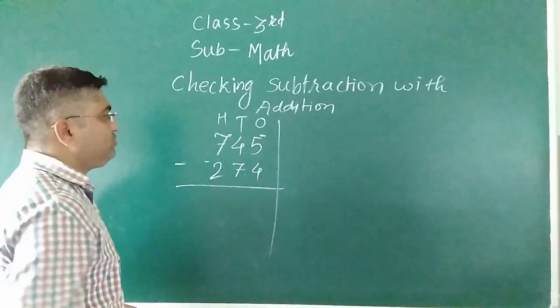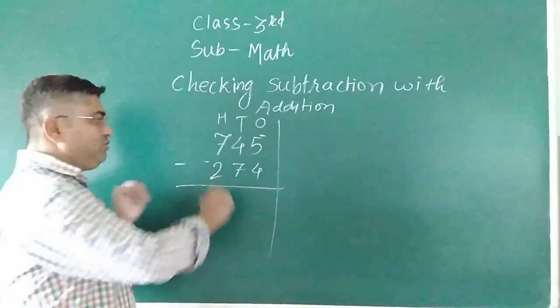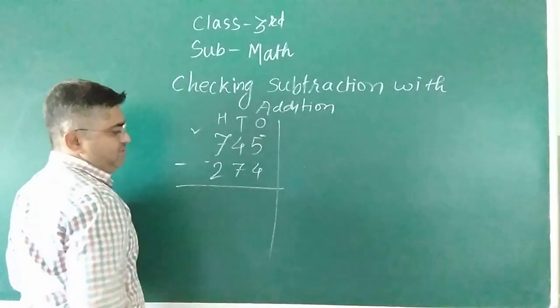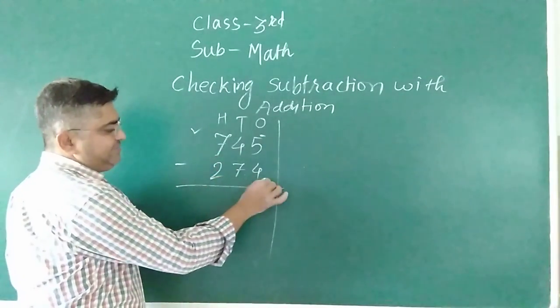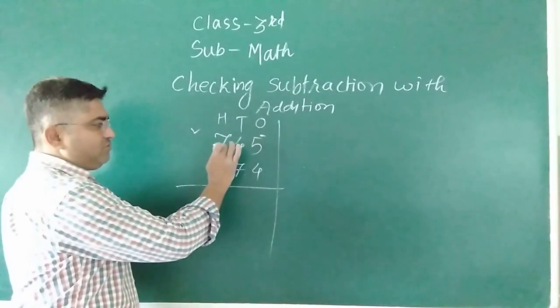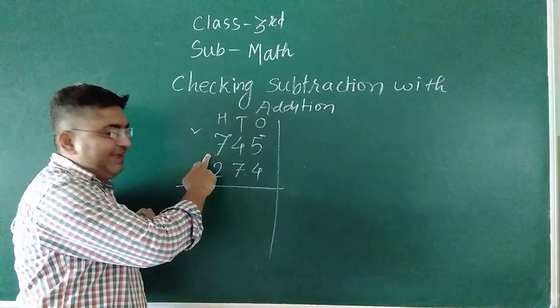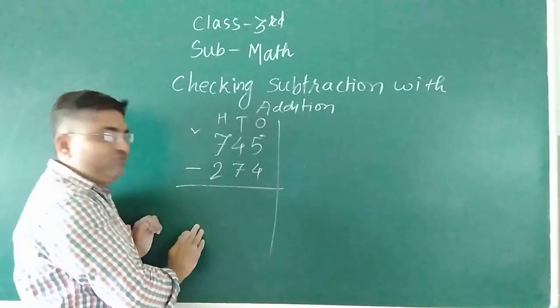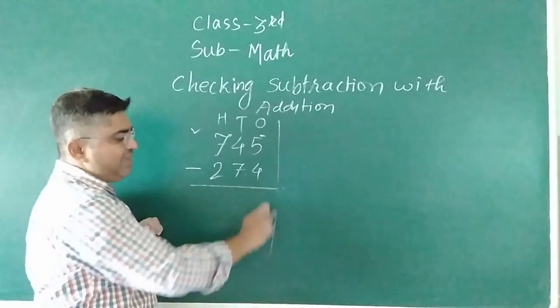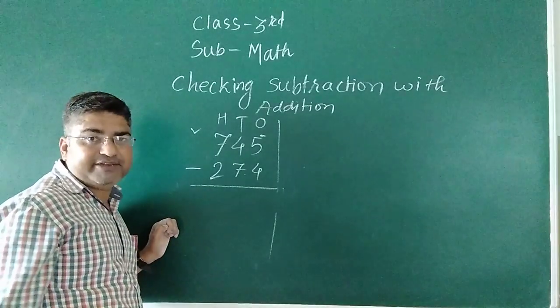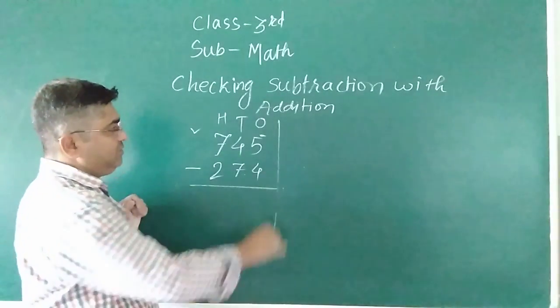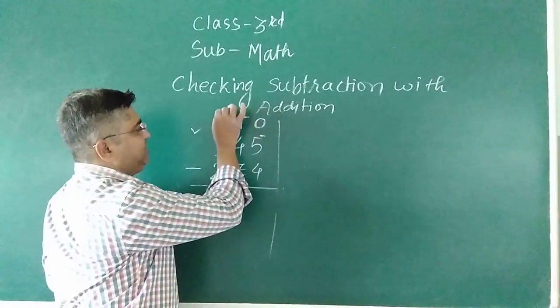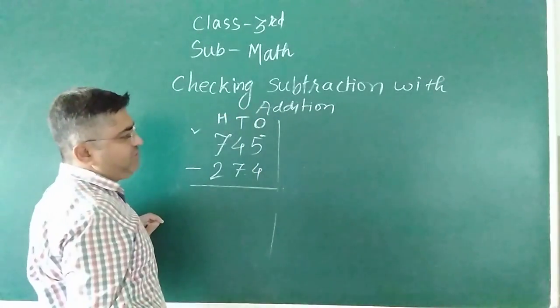There are two numbers, one is 745 and another number is 274. From that 745 we have to subtract 274. So how do we proceed? This is the ones place, this is the tens place, and this is the hundreds place.